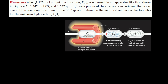Our problem tells us that when 1.125 grams of a liquid hydrocarbon, CxHy — so we don't know how many carbons and hydrogens there are, it's a mystery liquid hydrocarbon — was burned in an apparatus like that shown in figure 4-7. It combusts with oxygen, and we're told that 3.447 grams of carbon dioxide and 1.647 grams of water were produced.